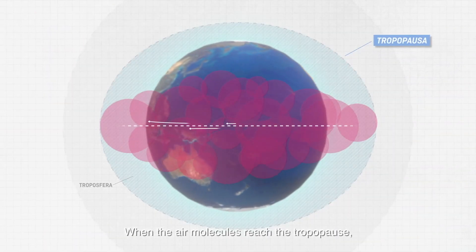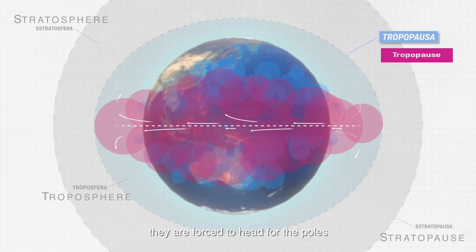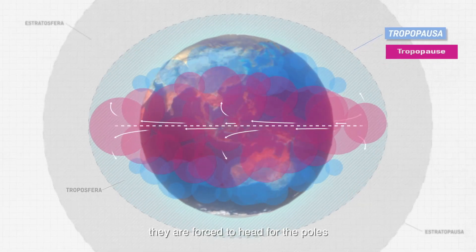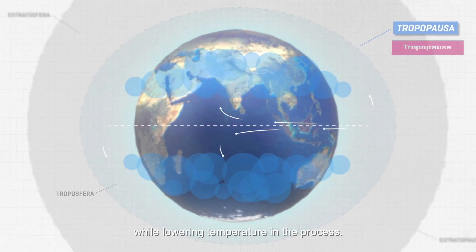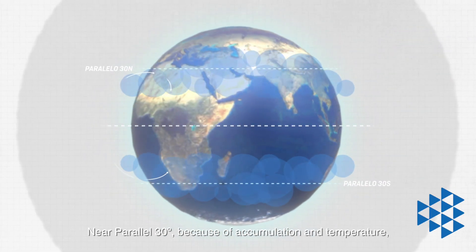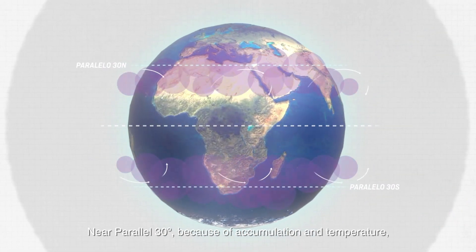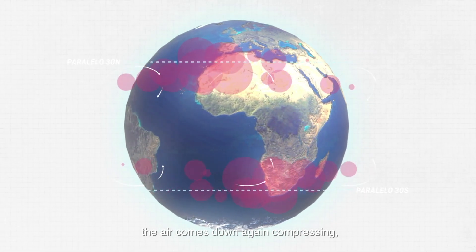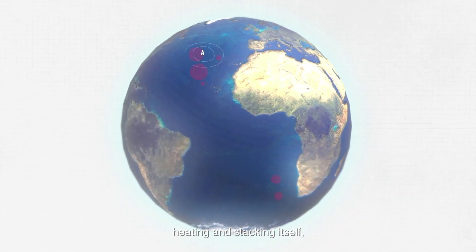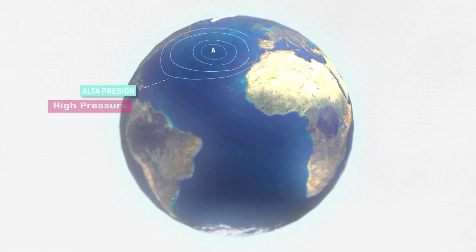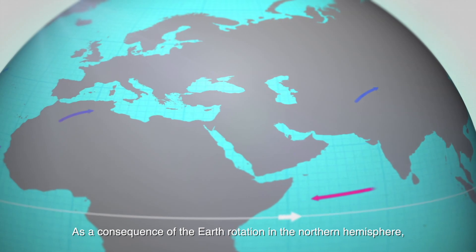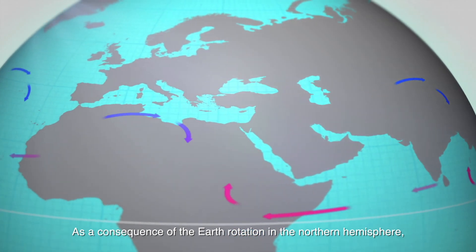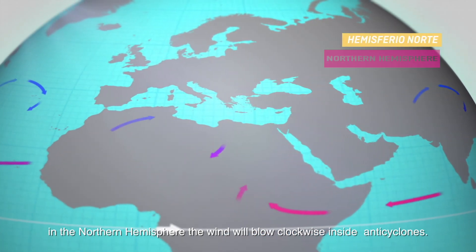When the air molecules reach the tropopause they are forced to head for the poles, losing temperature in the process. Near parallel 30 degrees, because of the accumulation and temperature drop, the air comes down again, compressing, heating and stacking itself, so generally high pressure forms. As a consequence of the Earth's rotation, in the northern hemisphere the wind will blow clockwise in anticyclones.